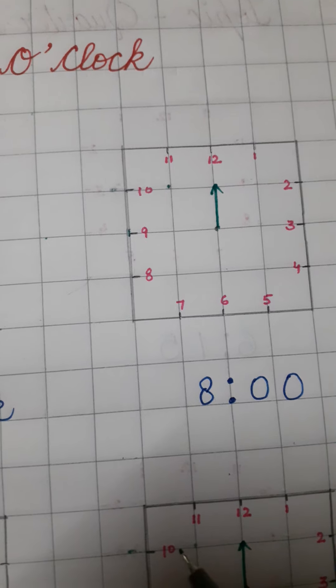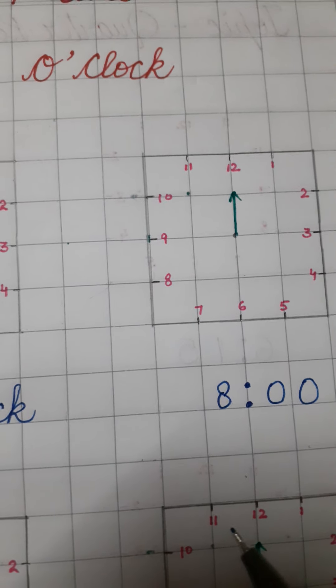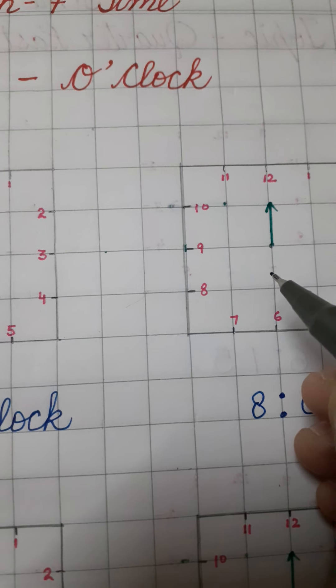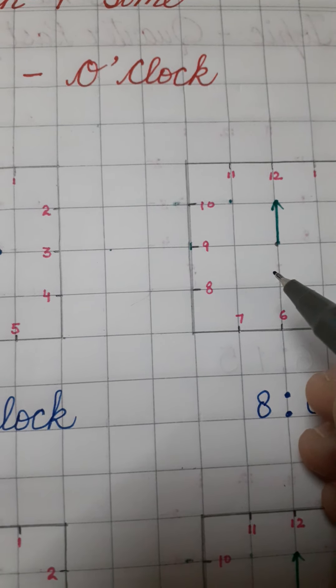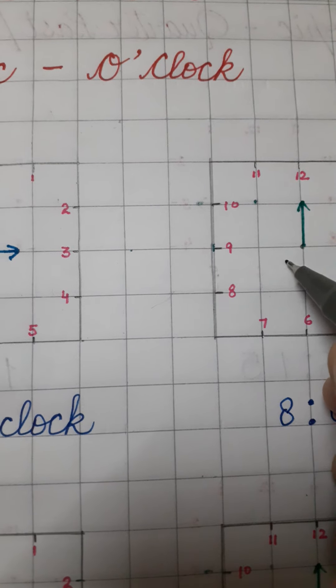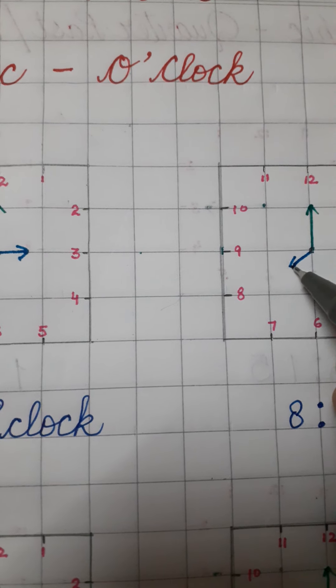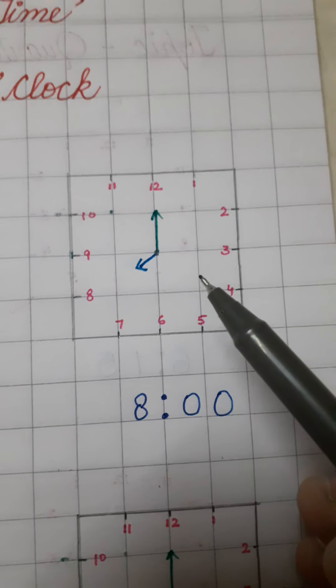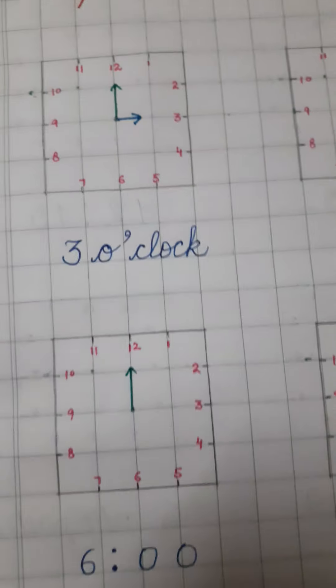Now, it is 8 o'clock. We have to show 8 o'clock. That is why I have to draw the short hand. Short hand is an hour hand. और उसे हम 8 की तरफ, towards 8 draw करेंगे. Now, it is showing 8 o'clock. Now, the next one.